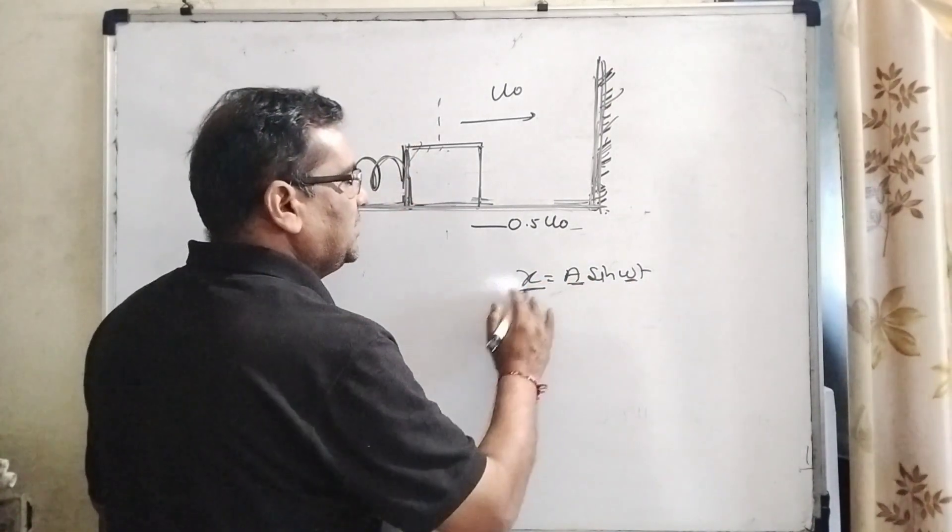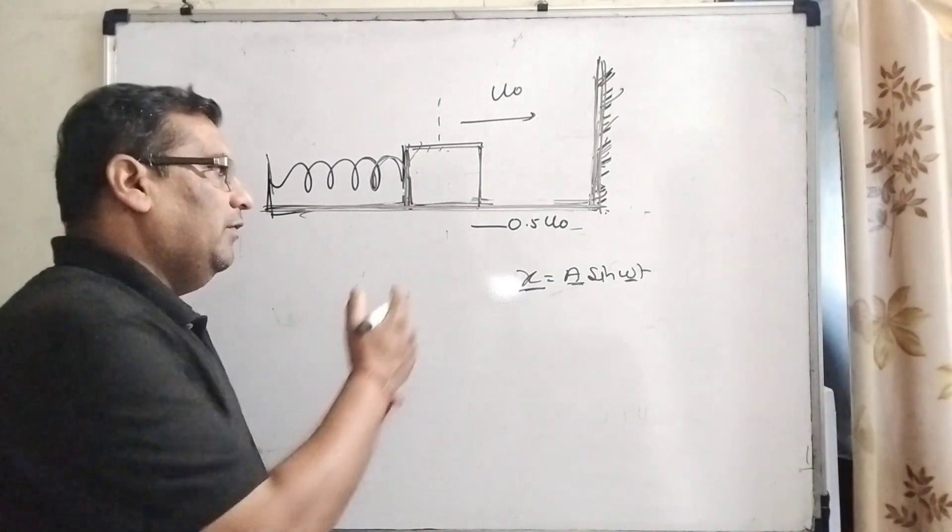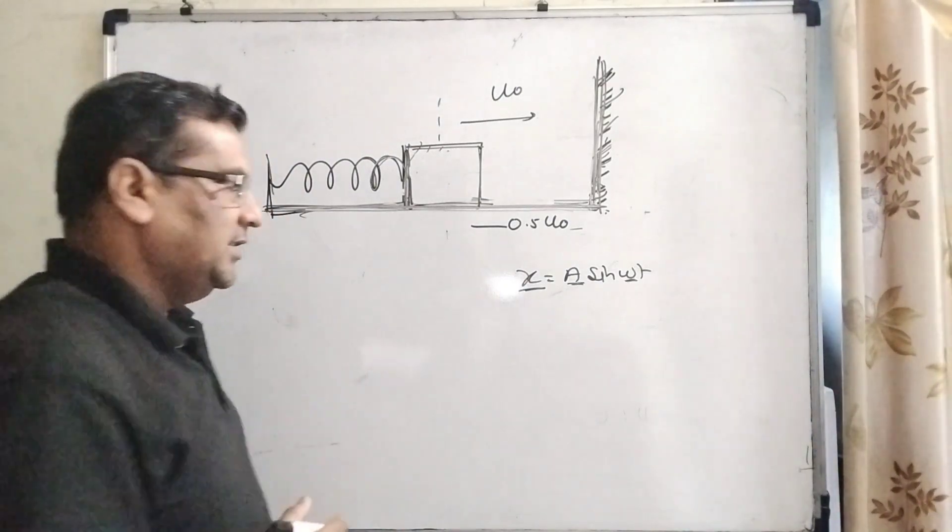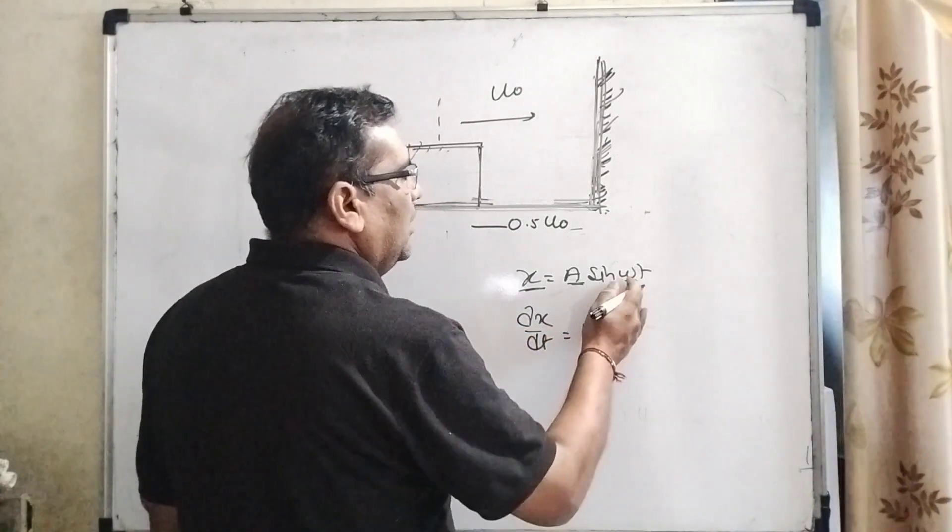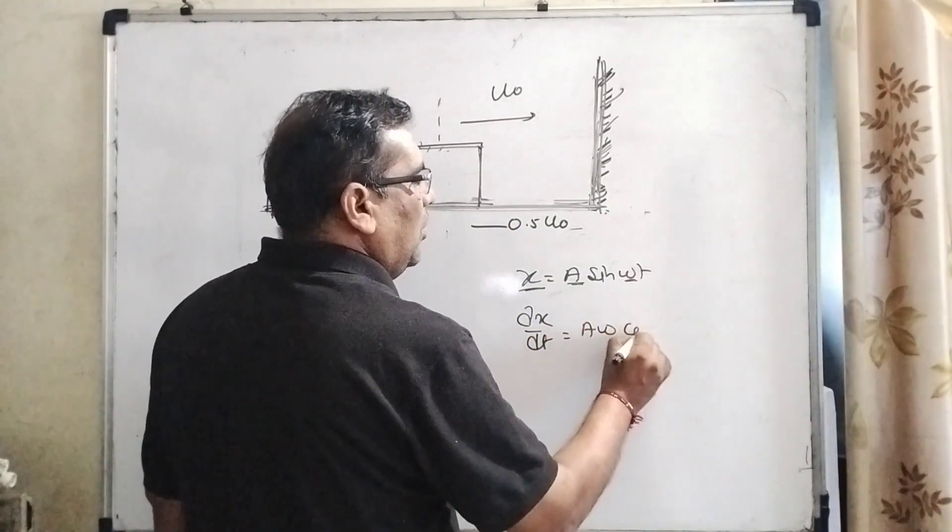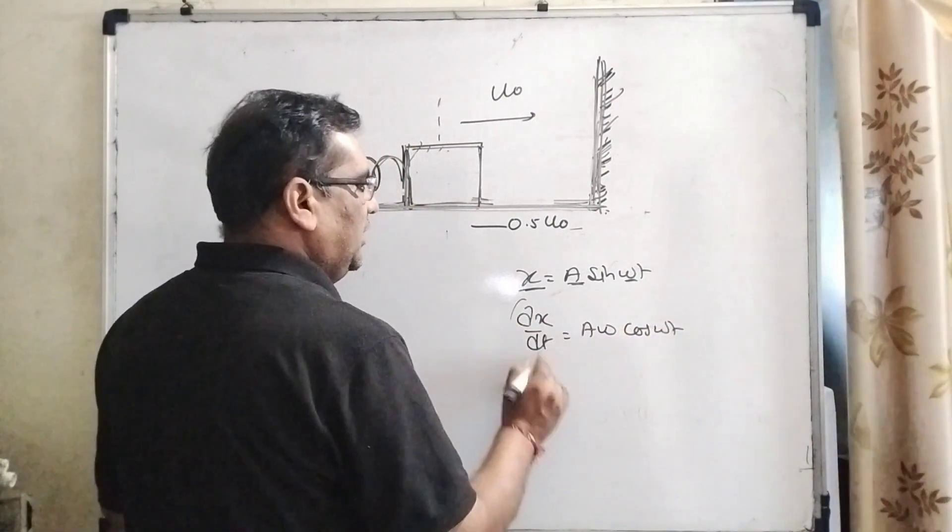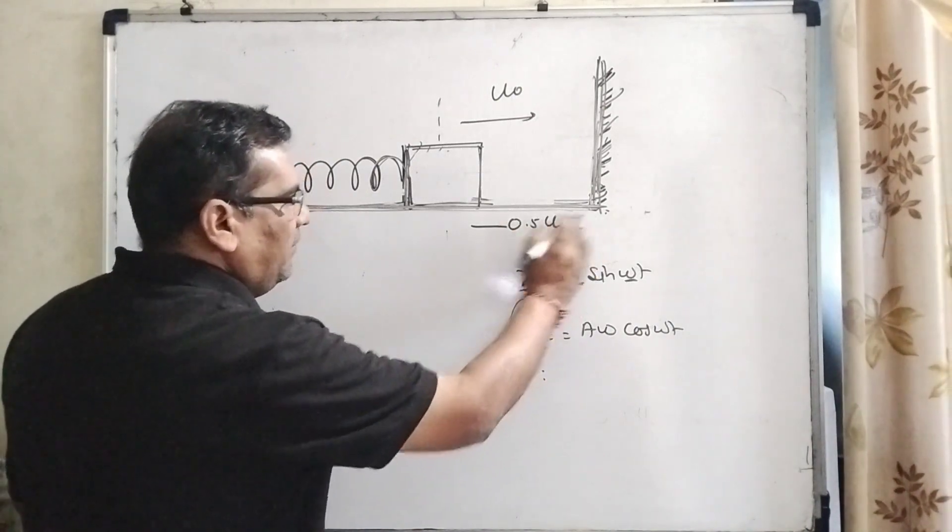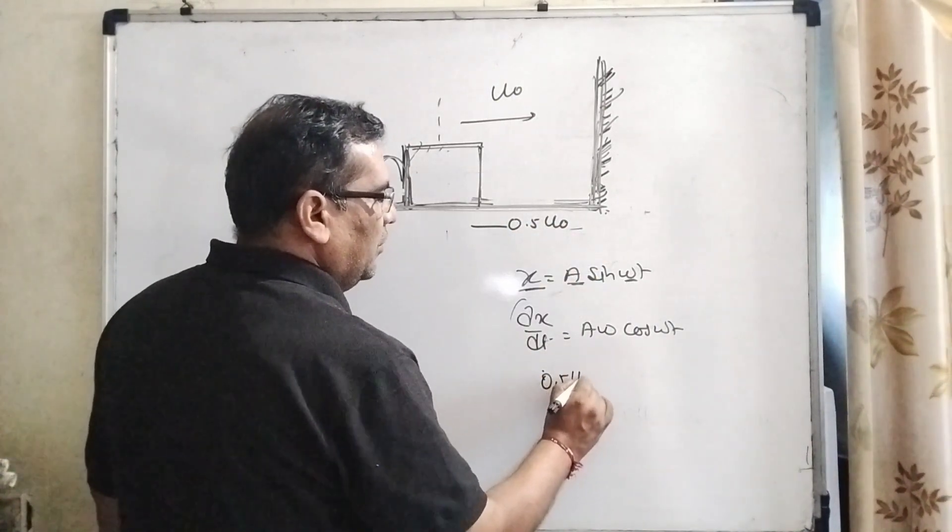Now differentiate with respect to t, then we will get the equation of oscillatory motion in the form of velocity. Then dx by dt equal to a omega cos omega t. dx by dt is velocity, and velocity is given as 0.5 u0.